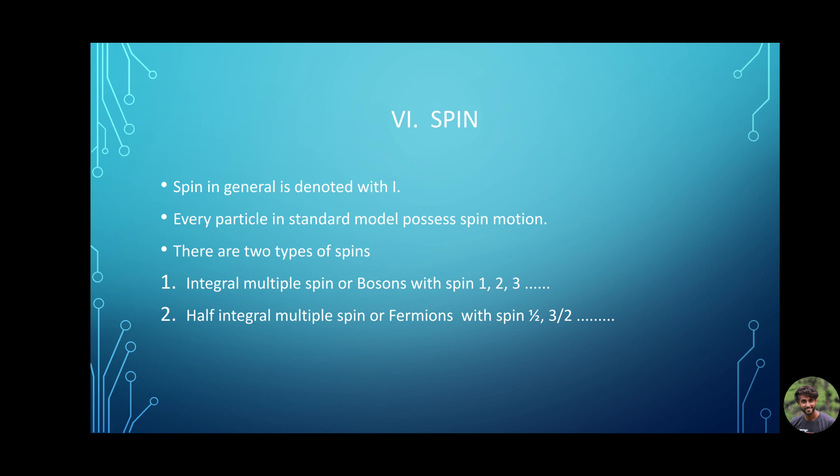Sixth, spin quantum number, capital I. It is observed that all elementary particles possess spin motion. And this spin is classified into two parts. Number one, particles which spin in integral multiples or also known as bosons. And second, particles which spin in half integrals, multiples or fermions. In the previous video, we have discussed about what fermions and bosons are. If you haven't watched that video, click on the right top corner. If you notice, this is the same quantum number in the electron. The reason for its half spin is because of being a lepton in fermions.